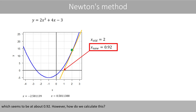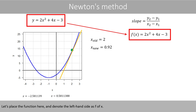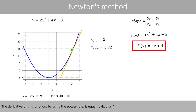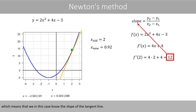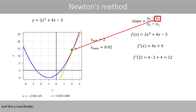From the video about the straight line, we know that we can calculate the slope of a straight line like this if we take the difference between two arbitrary points on the line. Let's place the function here and denote the left-hand side as f. The derivative of this function, by using the power rule, is equal to 4x plus 4. We can use this function to calculate the slope of the tangent line when x is equal to 2. We see that the derivative of the tangent line is 12, which means that we know the slope of the tangent line. We also know the x-coordinate of this point, which is 2, and the y-coordinate if we set x to 2 in this function.